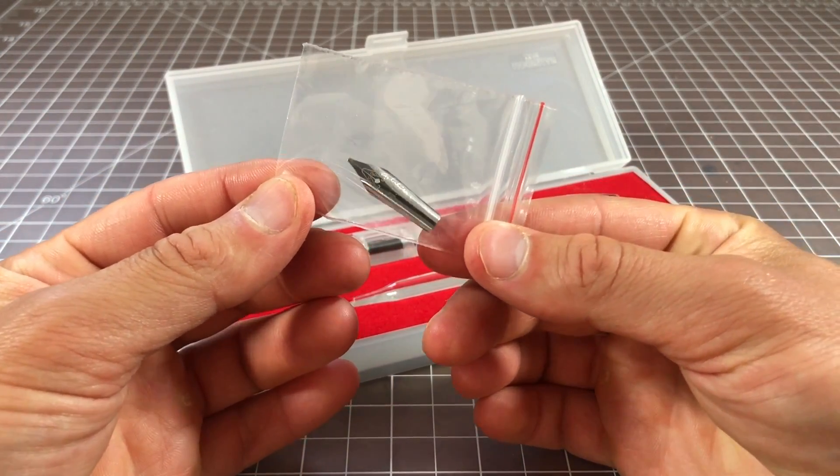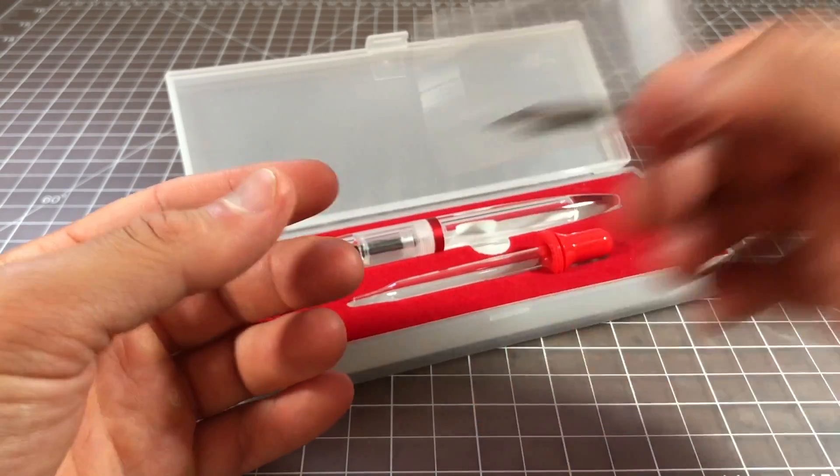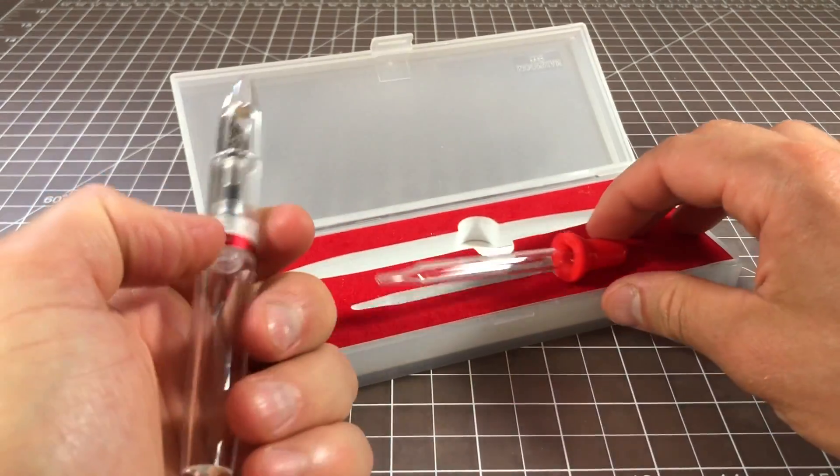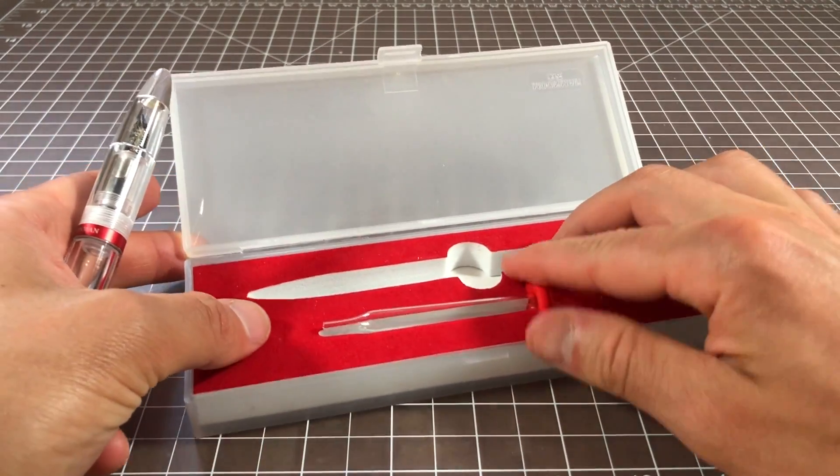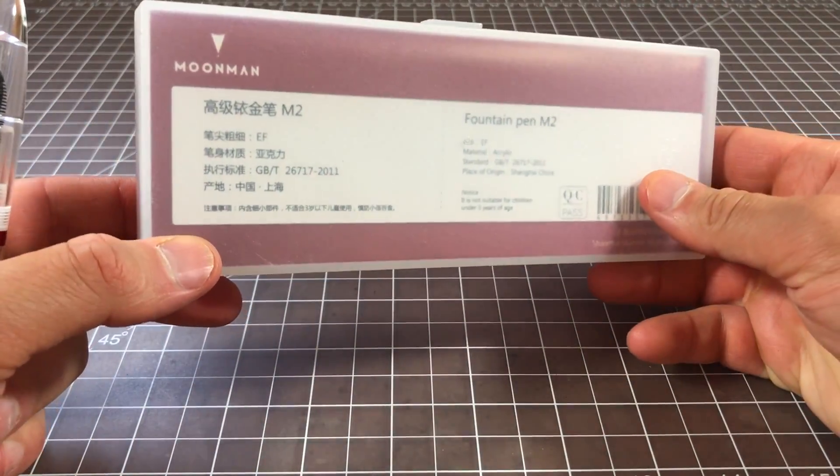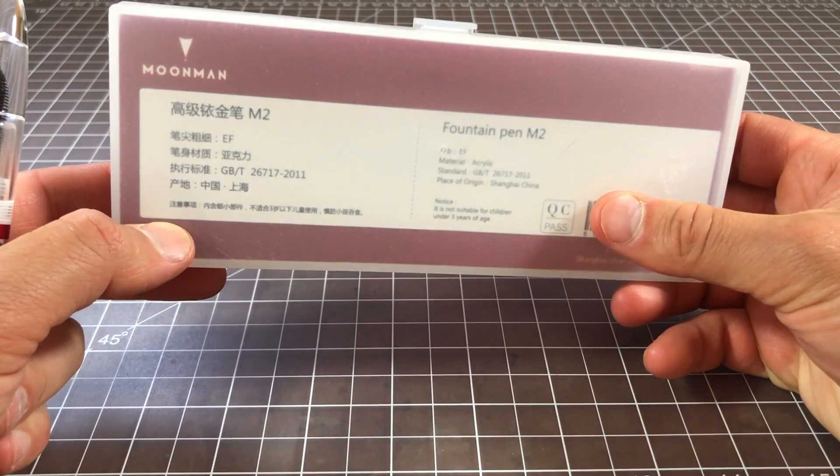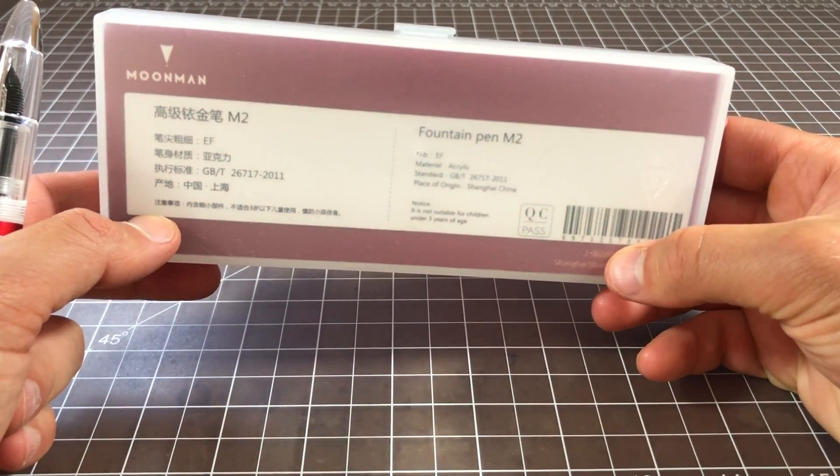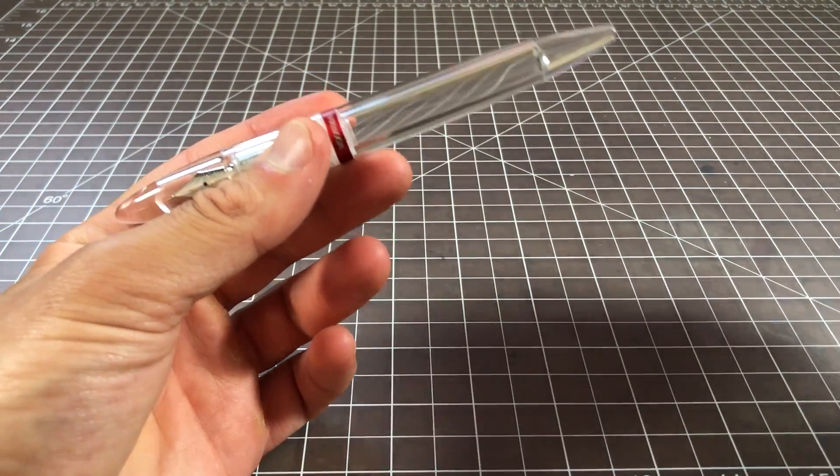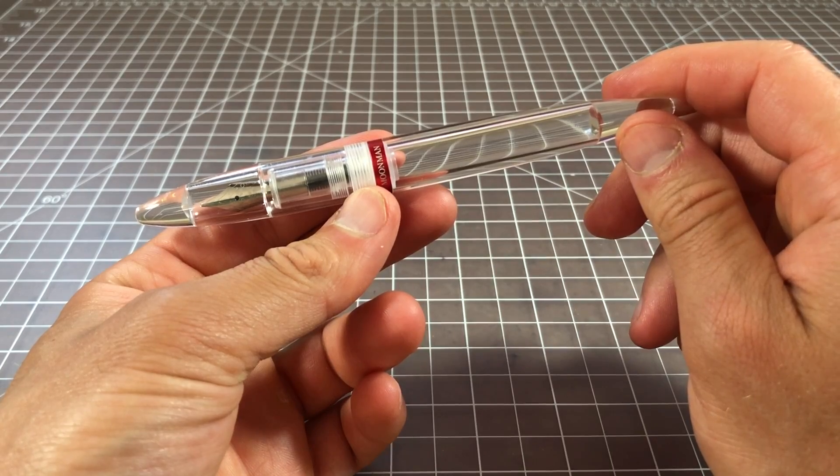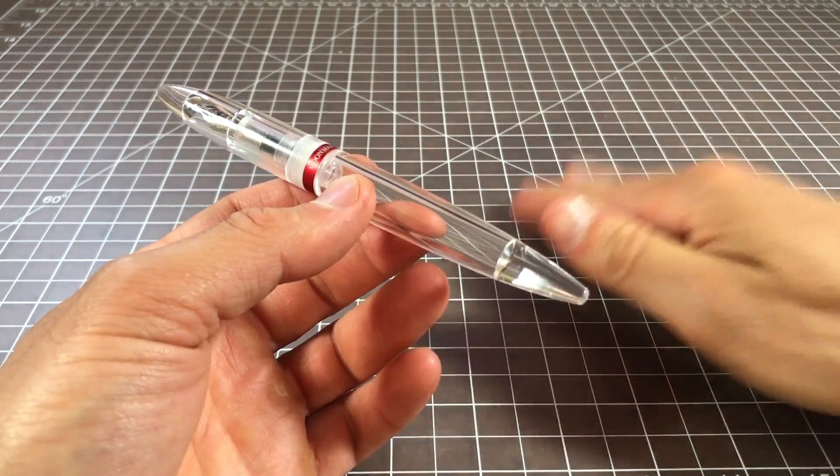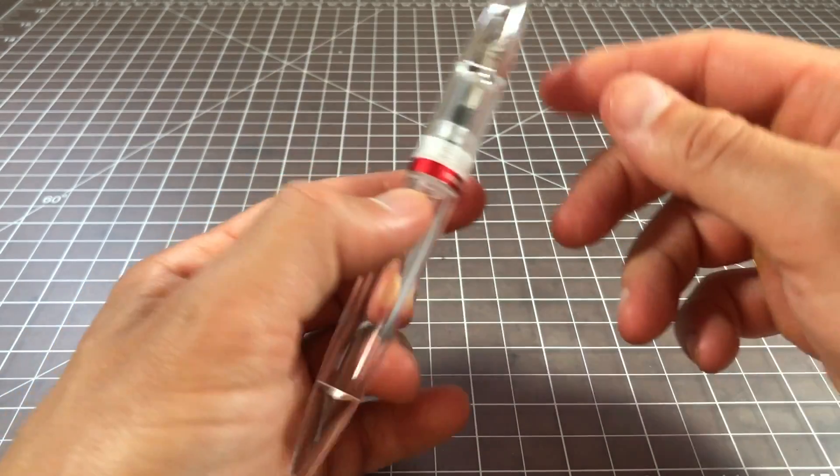This one came with a free nib, a 1.1 millimeter stub nib. Then we have the Moonman M2, and it comes with an eyedropper. This is the gift box with details about it: Moonman M2 extra fine and quality control stuff. It's pretty good. I've had more than one of these in the past, so I picked up another one to do the video fresh.